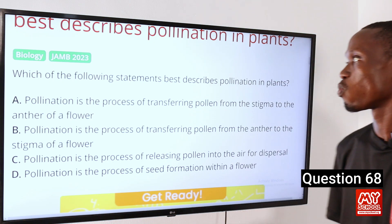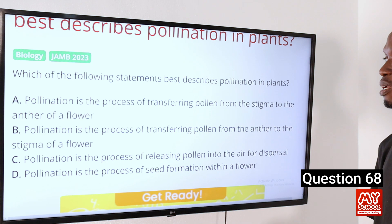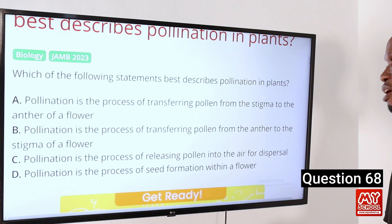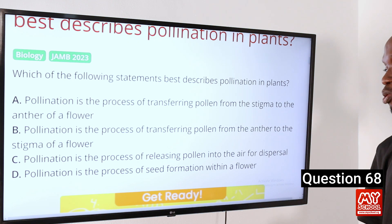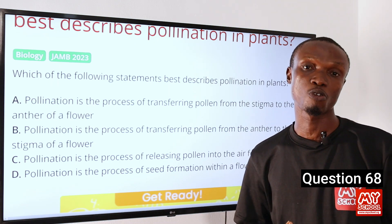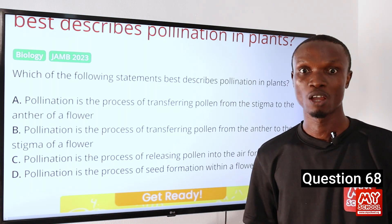Moving on to question 68: Which of the following statements best describes pollination in plants? A: Pollination is the process of transferring pollen from the stigma to the anther of a flower. B: Pollination is the process of transferring pollen from the anther to the stigma of a flower. C: Releasing pollen into the air for dispersal. D: The process of seed formation within a flower. In biology, pollination is defined as the transfer of pollen grain from the anther — the male reproductive organ — to the stigma, the female reproductive organ of a flower. So option B is correct.